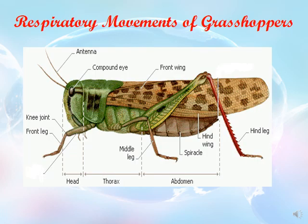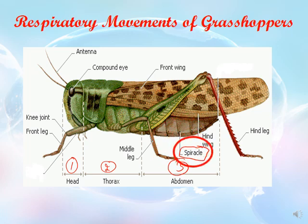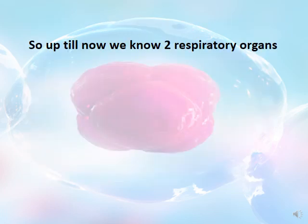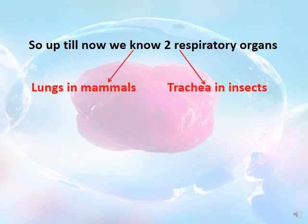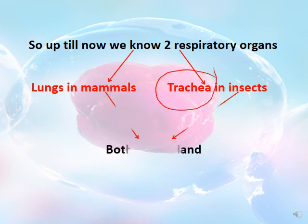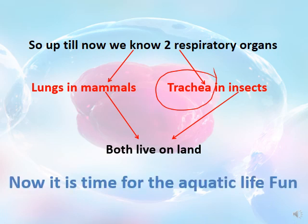The grasshopper has three body regions: the head, thorax, and abdomen. The abdomen contains spiracles, which are used for breathing. Regarding respiratory organs: in humans and mammals we have the lungs, and in insects we have the trachea. Both of these organisms live on land, so what about aquatic life?